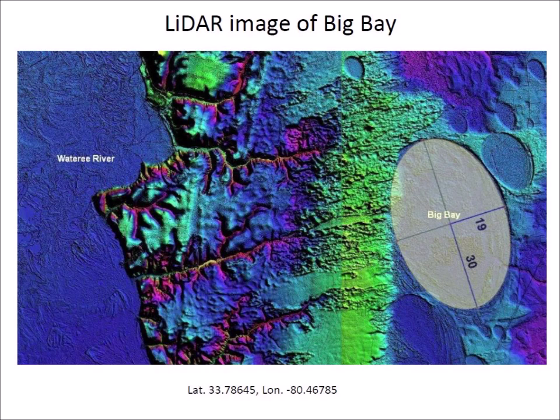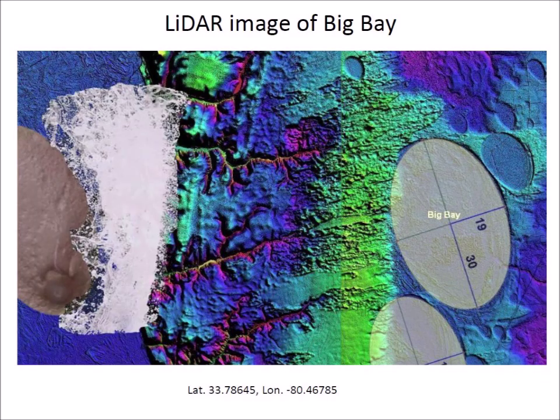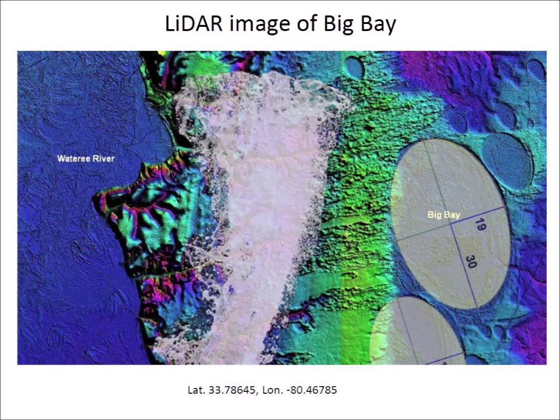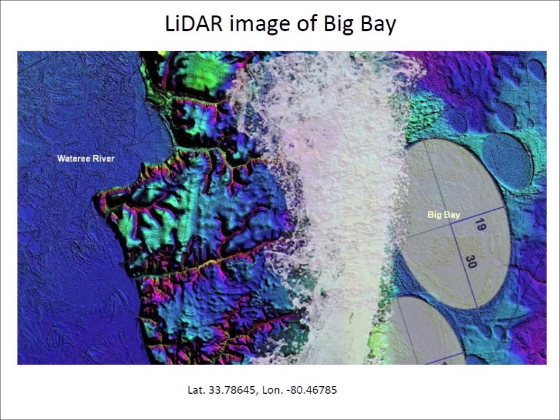The terrain features can be explained if impacts by two ice boulders created Big Bay and its lower companion bay. Seconds later, another big boulder impacted the Wateree River. The splash from the impact dredged the sandy deposits along the river bank, and the sandy soil was carried by a wave six kilometers inland. The sand sheet was deposited on a portion of Big Bay and its companion bay. A few seconds later, a small ice boulder came down to create a small bay on top of the sand sheet.